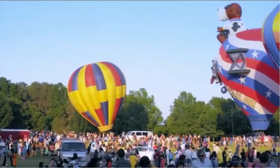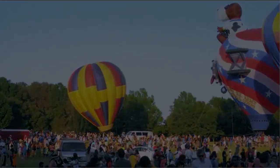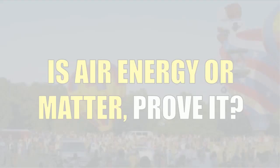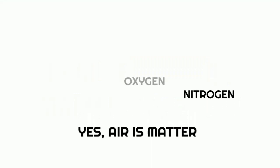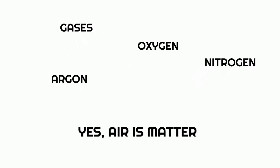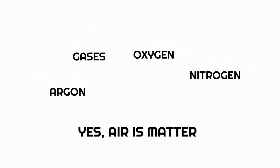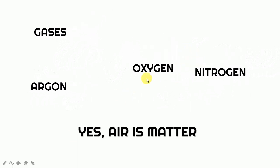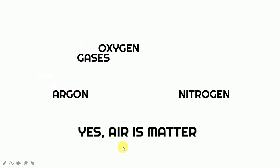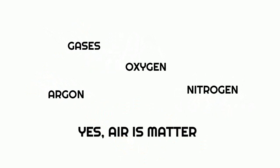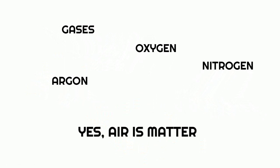Before we go deeper, you remember that in our last session we asked whether air is energy or matter and asked you to prove it. The answer is that air is matter, because nitrogen, oxygen, argon, and other gases in the environment each have their own mass. Since all these components have mass individually, air also has mass, so air is a matter. We answered that question scientifically.